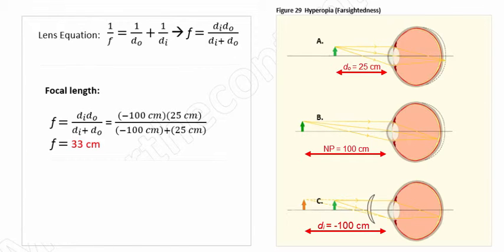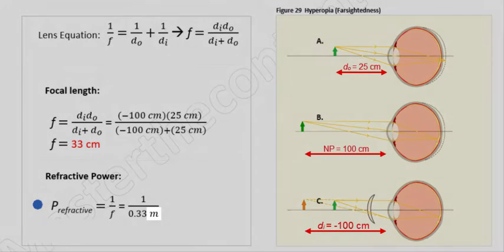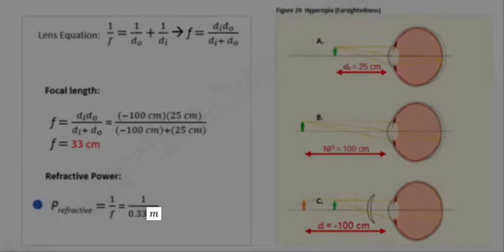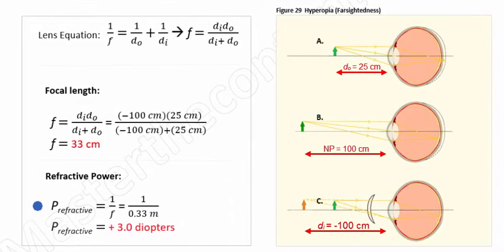Next, let's go ahead and find the refractive power of the contact lens using the equation we introduced on the previous slide. Now, if we just go ahead and fill in our value, note that the focal length is now in meters and no longer in centimeters. And upon solving, we find that the refractive power is going to be three diopters.